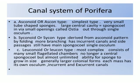Canal system of Porifera: the ascon type is the very simplest type — very small tube-shaped sponges with a large central cavity. Water flows in via small openings called ostia and out through a single osculum. The second type is the sycon type, taken from the ascon pattern by folding, with more branching incurrent canals and side passages, but still having a single osculum.